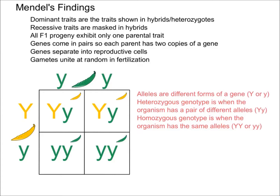A homozygous genotype is when the organism has the same alleles — either both capital Y or both lowercase y. If they're both capital Y, the dominant trait, it's homozygous dominant. If they're both lowercase y, the recessive trait, they're homozygous recessive.